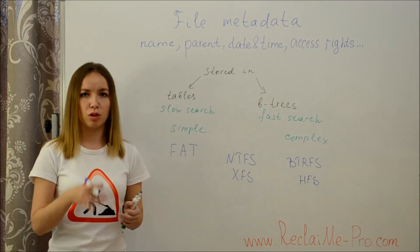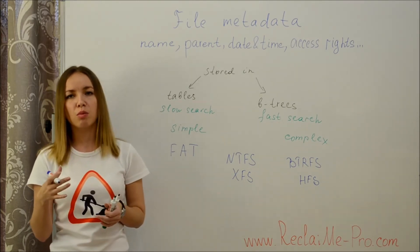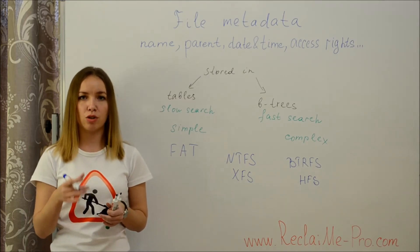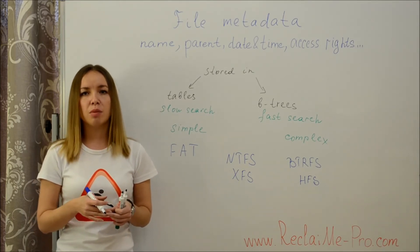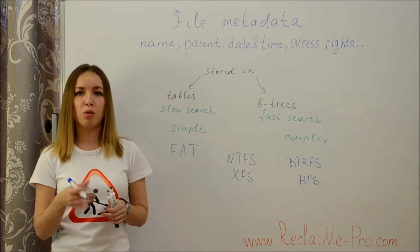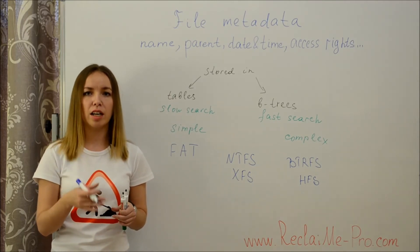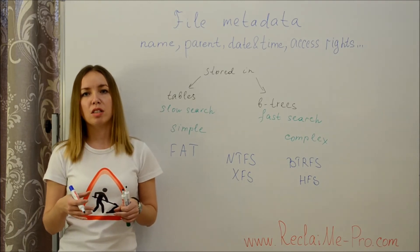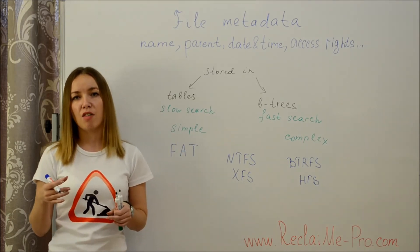B-trees, due to sorting specifics, store all metadata of a particular file in one place. B-trees consist of blocks of two types: blocks storing pointers to other blocks, and blocks storing actual metadata. It is typically easy to find blocks just by scanning a disk. Blocks with pointers are useless in data recovery because blocks with metadata can be found without them.